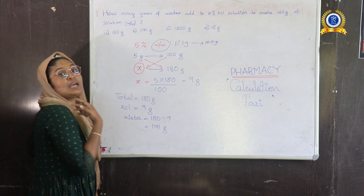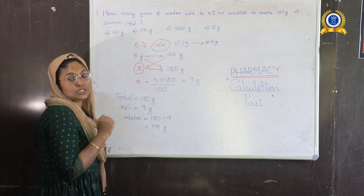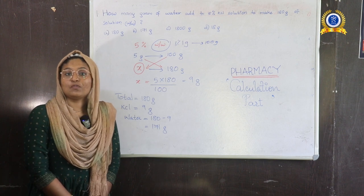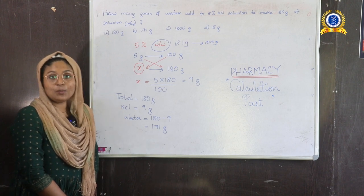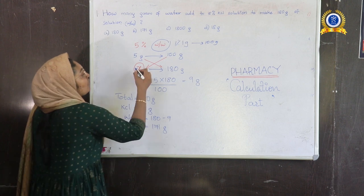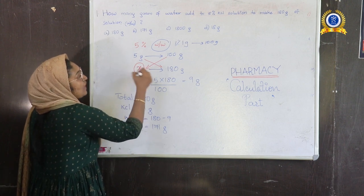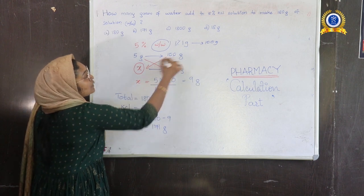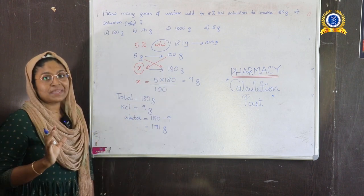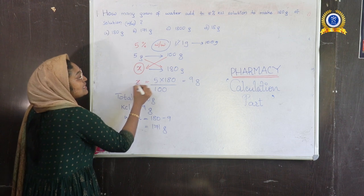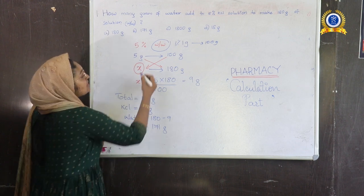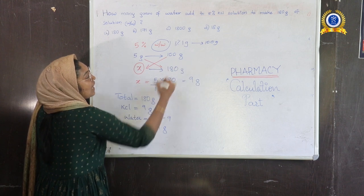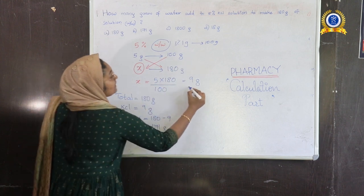We are making 180 grams of solution. To find how much KCl is required, we write X and use cross multiplication: X = 5 × 180 ÷ 100. So you will get 9 grams of KCl.